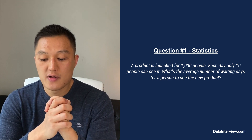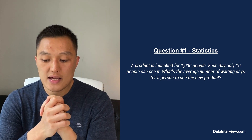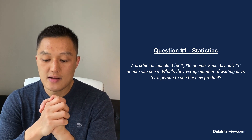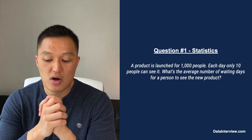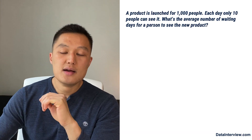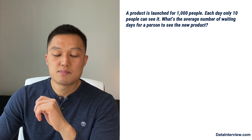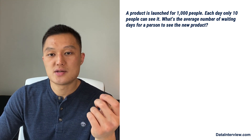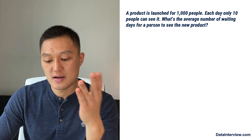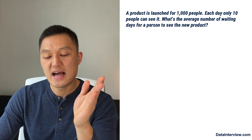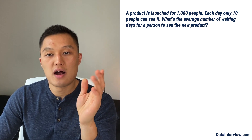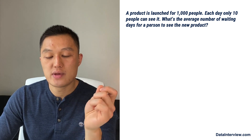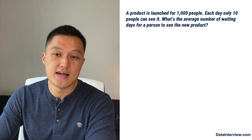So let's start with the first problem. A product is launched for a thousand people. Each day, only 10 people can see it. What's the average number of waiting days for a person to see the new product? To think about this, we first have to digest it a bit. We know there are a thousand people and each day only 10 people can see it.